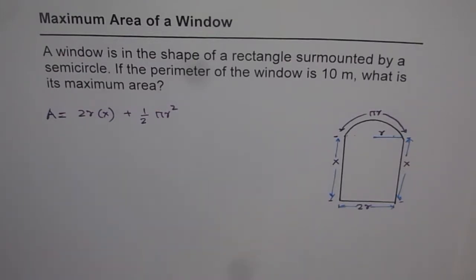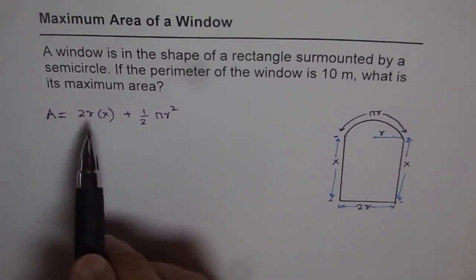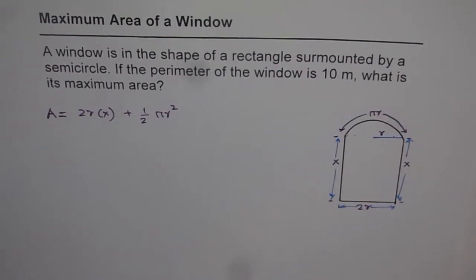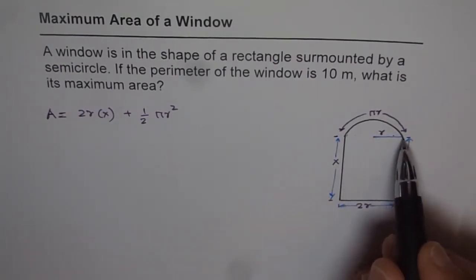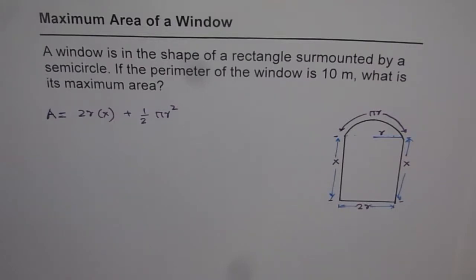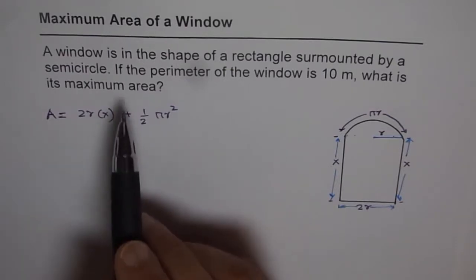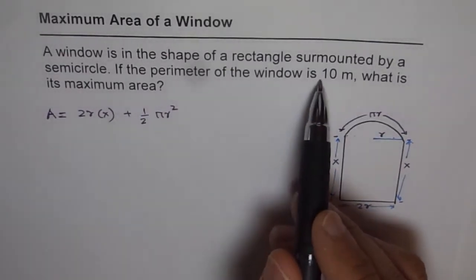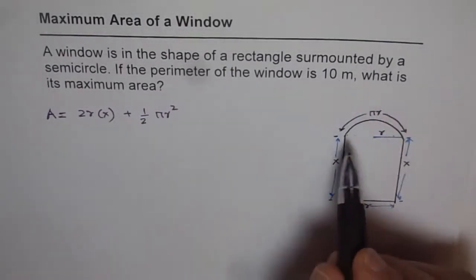Looking at this expression for area, we find two variables: the radius r and the height x. Whenever two variables are involved, we need to find an equation that relates them. In our case, the statement 'if the perimeter of the window is 10 meters' provides that relationship.